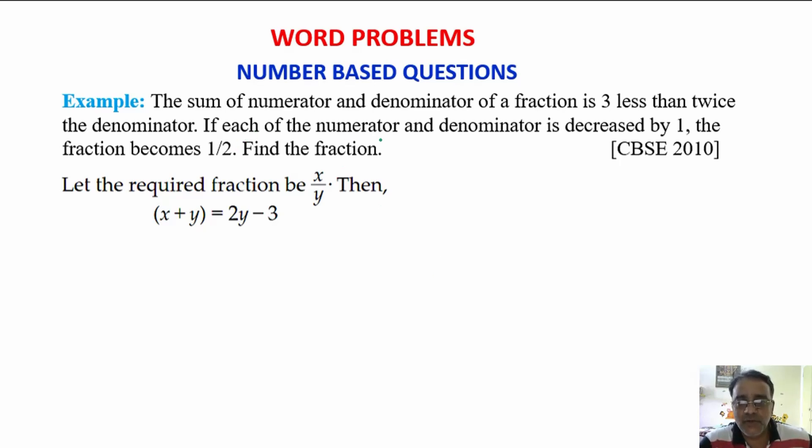Now, if each of the numerator and denominator is decreased by 1, then the fraction becomes 1 by 2. So, we will get x minus 1 upon y minus 1 is equal to 1 by 2.